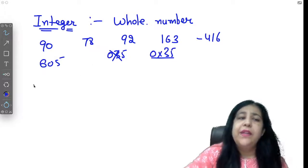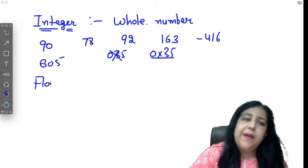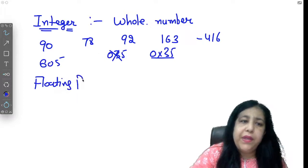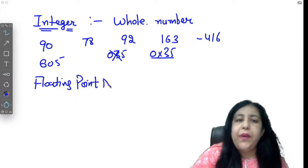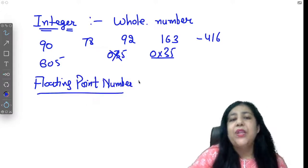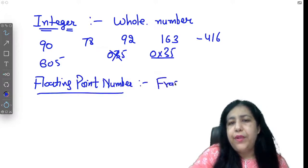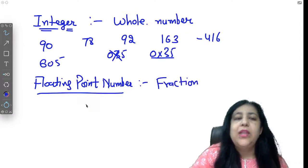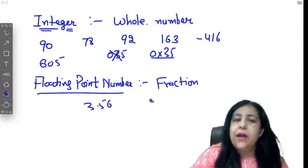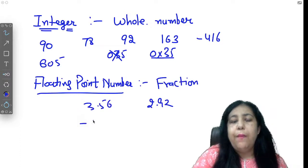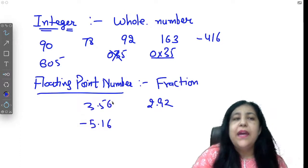Second we have floating point numbers. In floating point numbers we have a fractional part in the number. So fraction numbers, like 3.56, 2.92, minus 5.16, these are floating point numbers.